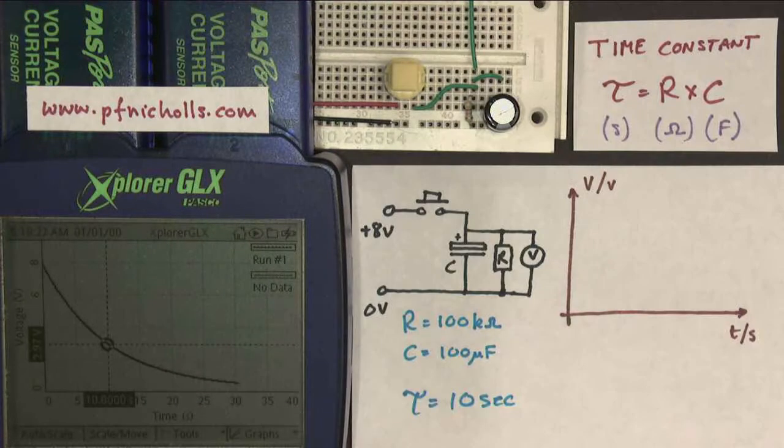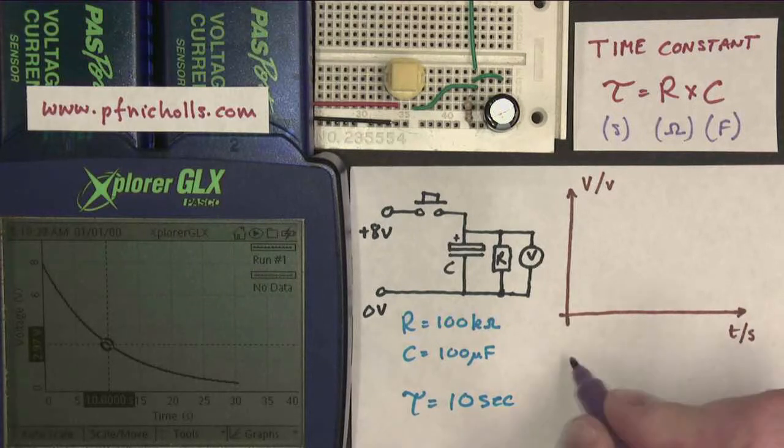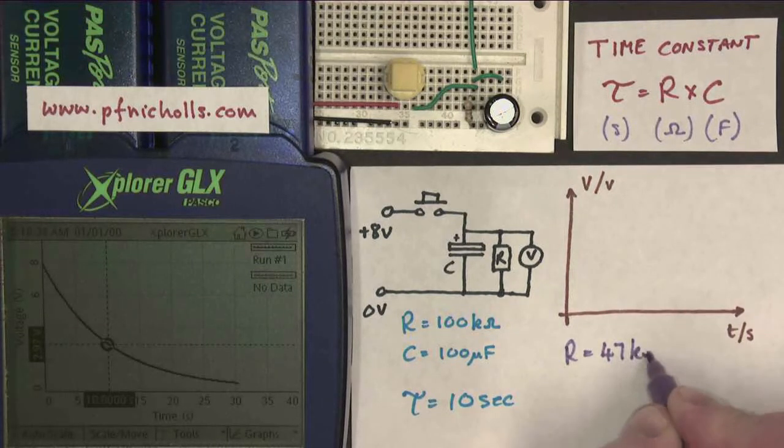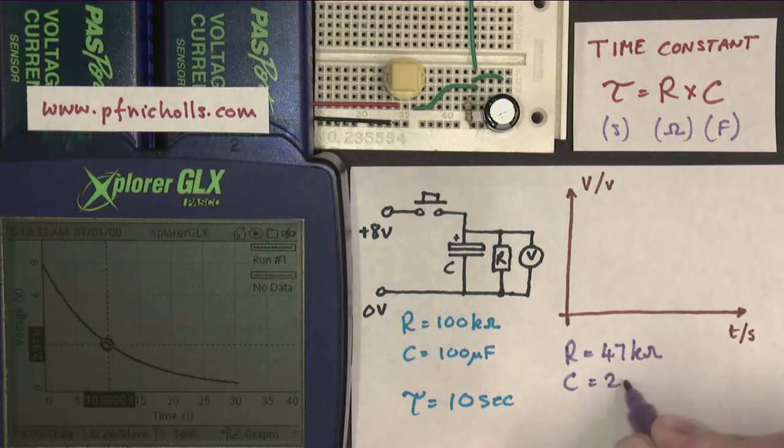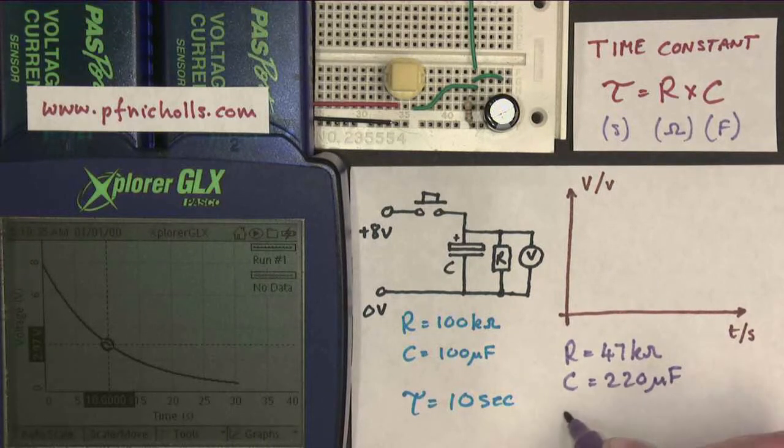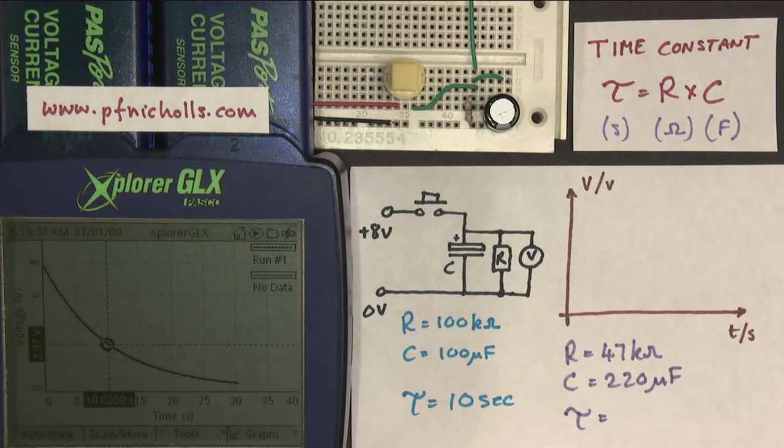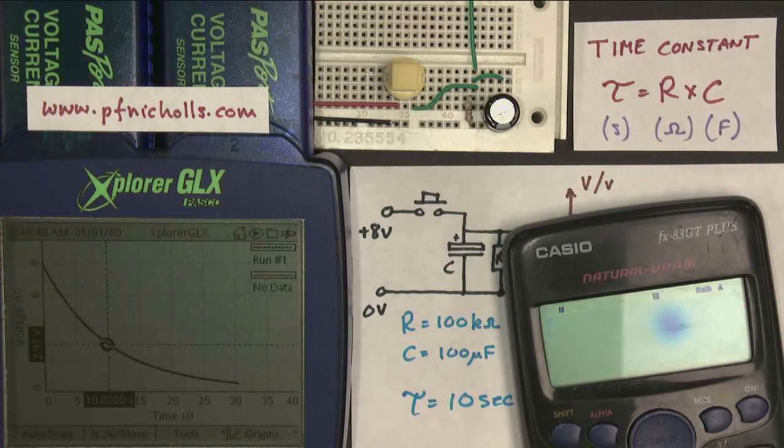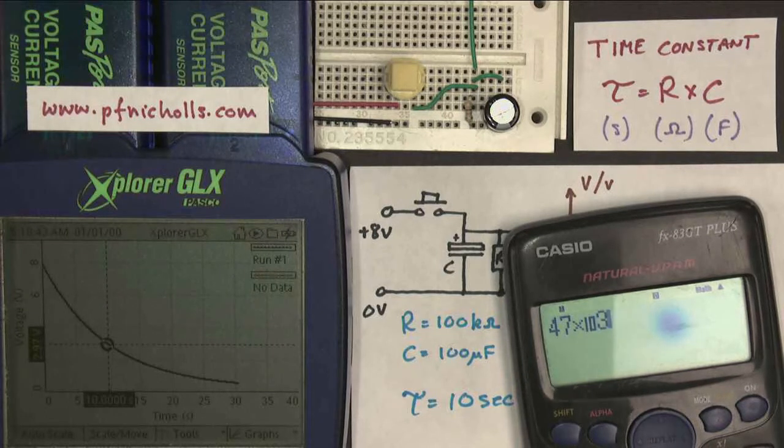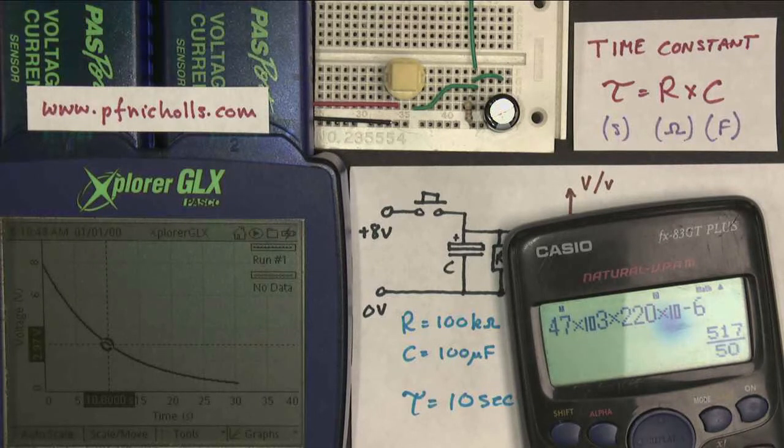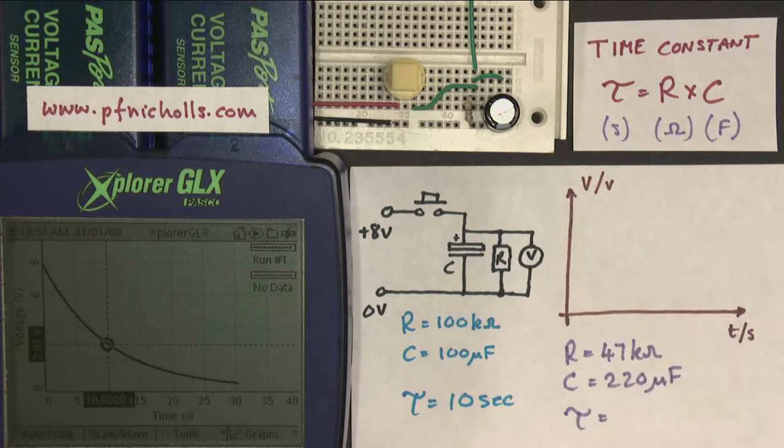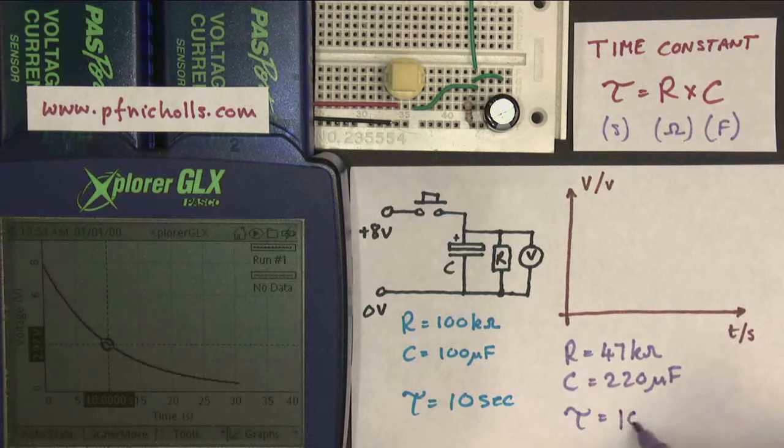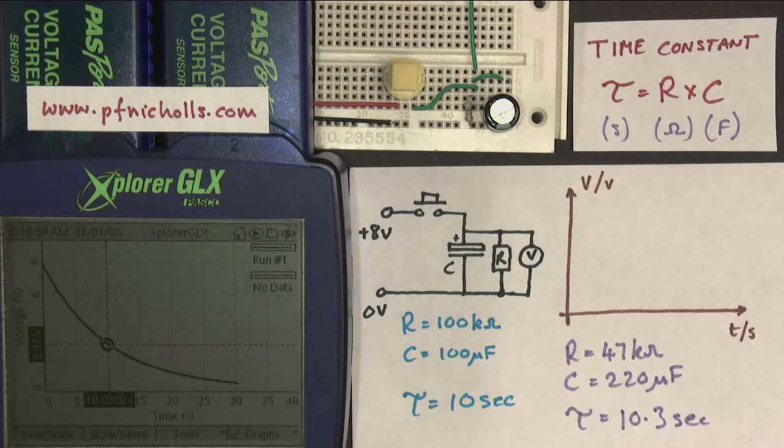And I'm going to work out the new time constant. So now I have that R equals 47 kiloohms and C equals 220 microfarads. So now my time constant should be 47 times 10 to the 3 times 220 times 10 to the minus 6 equals 10.3 seconds. So even though I've changed both of the component values, my graph should actually do pretty well the same thing.